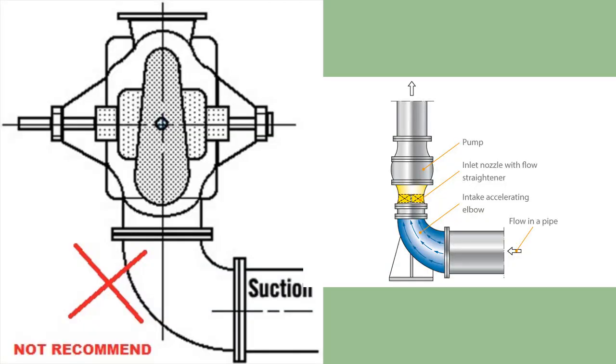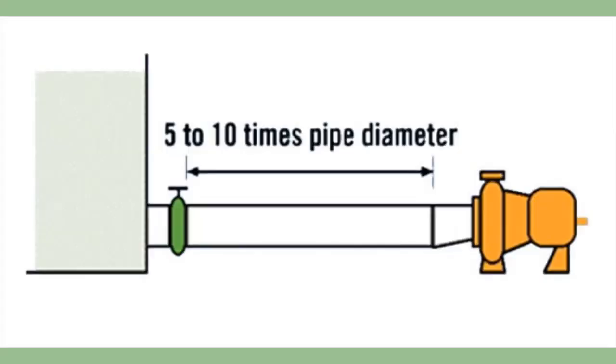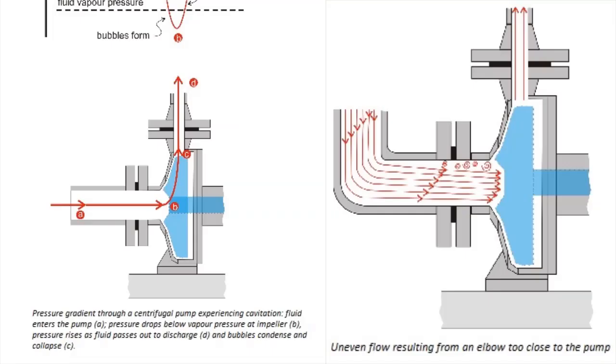Number four, eliminate elbows mounted on or close to the inlet nozzle of the pump. Include five to ten pipe diameters of straight run pipe between the pump inlet and elbow. This helps eliminate the side loading of the pump impeller and creates uniform flow.